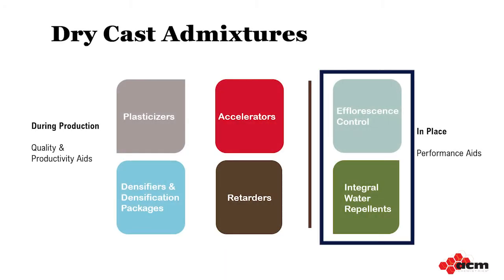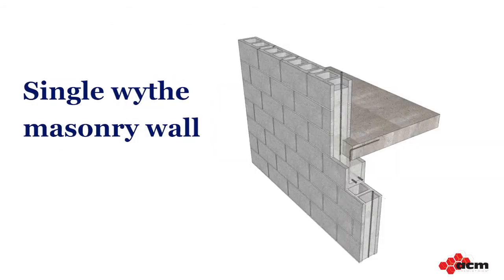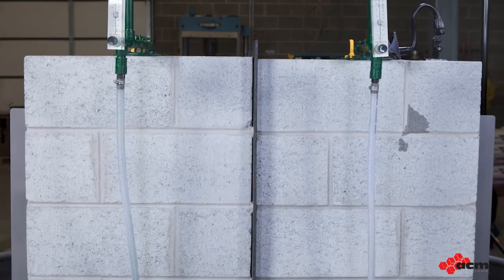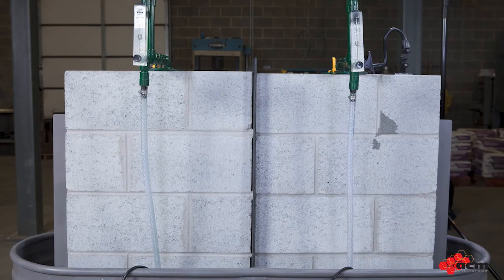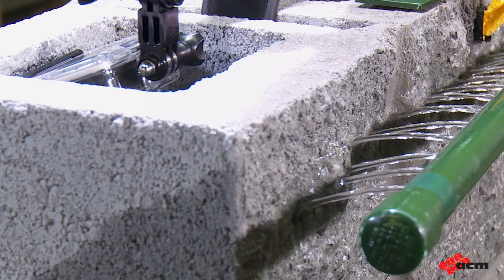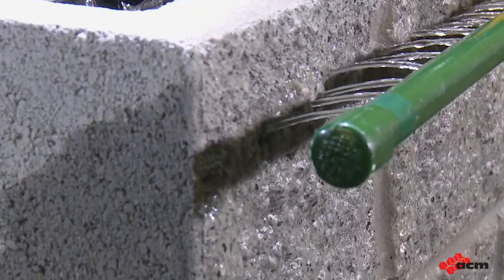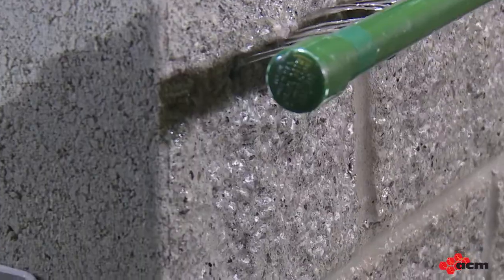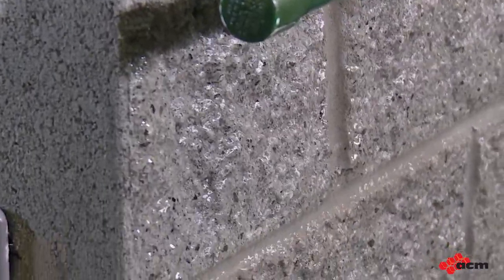Now let's talk about integral water repellents. Integral water repellents, or IWR, are a key ingredient in the manufacture of architectural CMU, or concrete masonry units. These are used to build single-wide exterior walls, which means that these walls are the only barrier between rain and snow outside and the interior of the building. To help us understand why we need water repellents, we've put together a demo wall here with water repellent and regular CMU. The water repellent side has water repellent CMU and mortar, and rainfall is simulated with a spray bar.